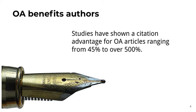Open Access also benefits authors because authors want their work to be read and to have impact. Studies have shown a citation advantage for OA articles ranging from 45% to over 500%. Open Access benefits everyone — it accelerates the production of new knowledge and thus progress toward solutions to the world's problems.